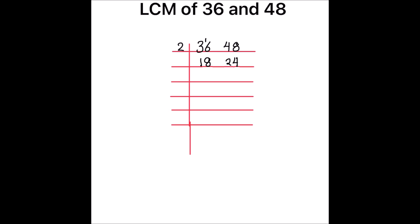Again both numbers are even, so we divide by 2. 2 times 9 is 18. 2 times 2 is 4. Now 9 is an odd number — it is not fully divisible by 2, so we will write it as is. And we will divide 12: 2 times 6 is 12.